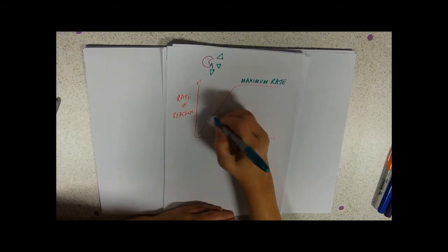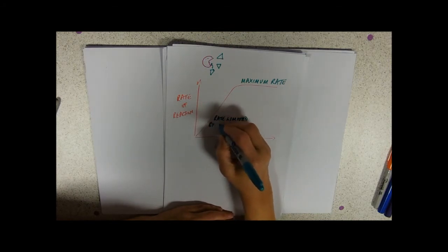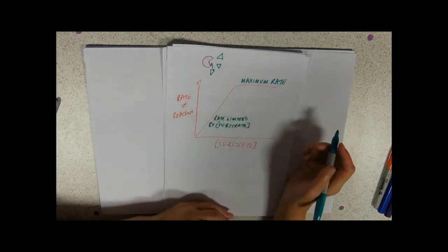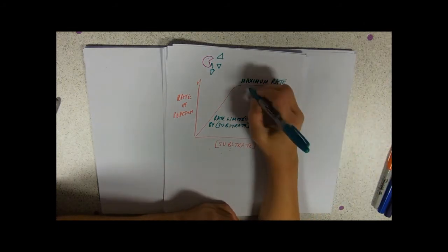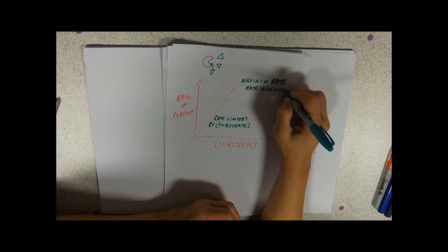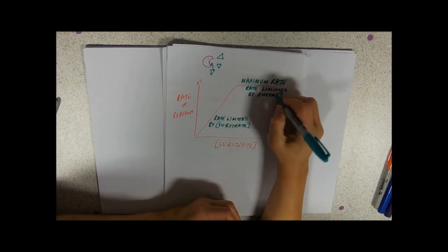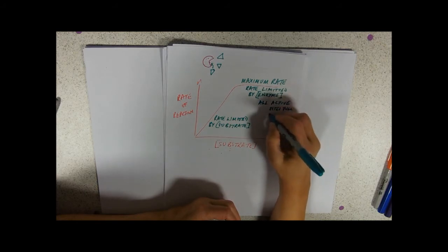Here, we're not at the maximum rate. Here, the rate is limited by the substrate concentration. I'm just using these little square brackets here instead of writing concentration out. This is the maximum rate. So, we're not limited by how much substrate we've got. We're limited by how much enzyme we've got. So, here, the rate is limited by the enzyme concentration. And all the active sites are full all the time.